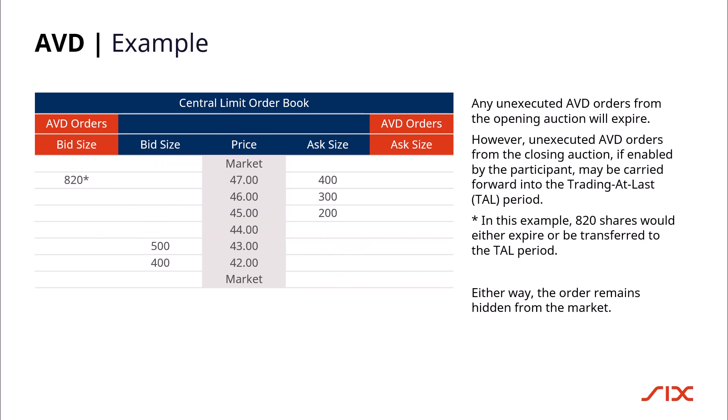Any unexecuted AVD orders from the opening auction will expire. However, unexecuted AVD orders from the closing auction, if enabled by the participant, may be carried forward into the trading at last period. In this example, 820 shares would either expire or be transferred to the TAL period. Either way, the order remains hidden from the market.